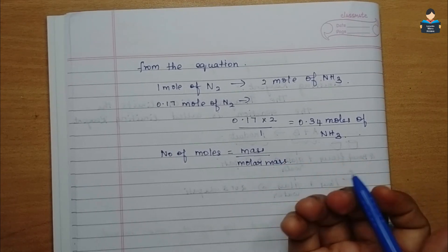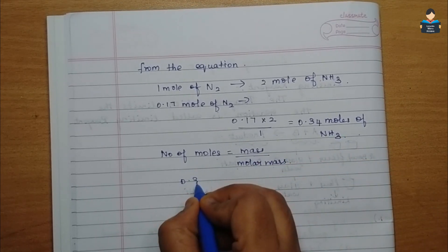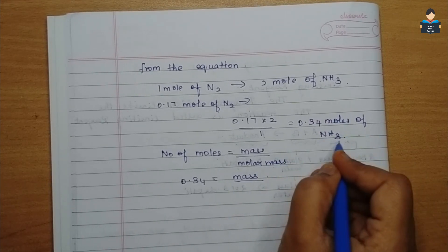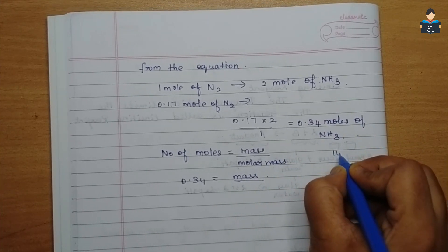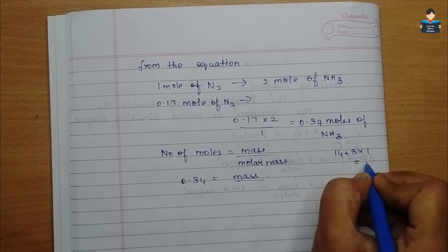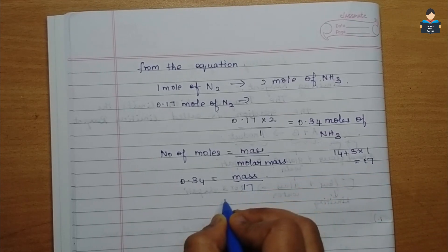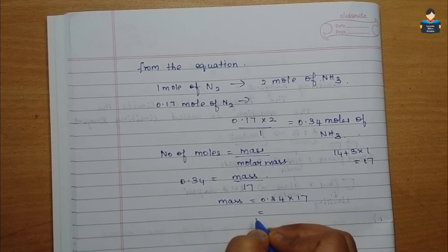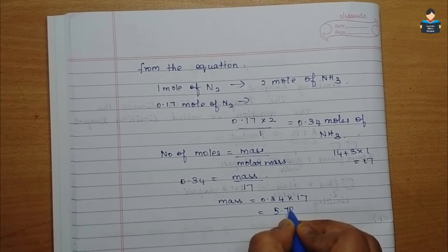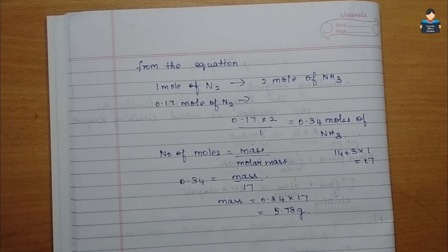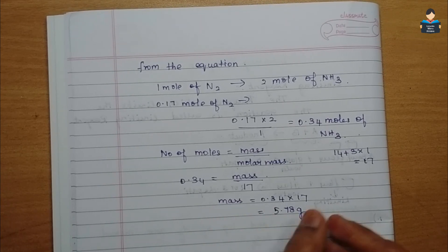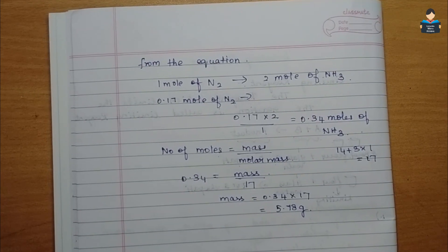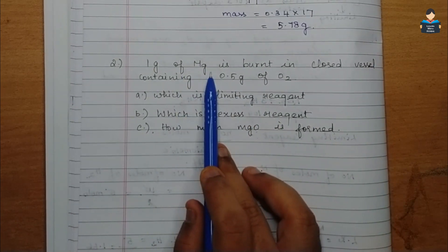Number of moles of NH3 = 0.34 moles (since 0.17 moles N2 gives 2 × 0.17 = 0.34 moles NH3). Molar mass of NH3 = 14 + 3 × 1 = 17. Mass of NH3 = 0.34 × 17 = 5.78 grams. So the mass of ammonia formed is 5.78 grams.